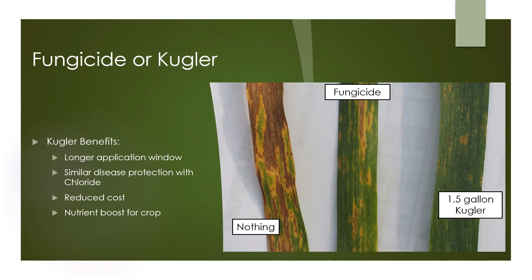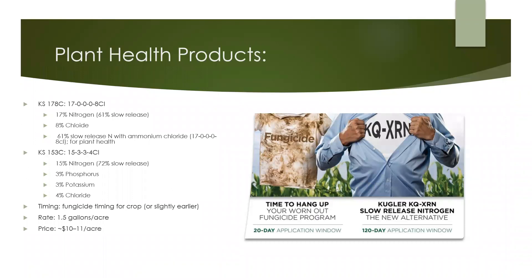It's typically about two-thirds the cost, and you provide your crop with a nutrient boost at the same time. We have two plant health products. First is KS178C — this is 17% nitrogen and 8% chloride, and it works great in most crops including cereals, pulses and canola. The second is KS153, which is 15% nitrogen with 3% phosphorus, 3% potassium, and 4% chloride — this works well in crops taking up phosphorus or potassium late in the season, like canola and pulses. Timing for application is at fungicide timing for the crop, or slightly earlier, as it will stick to the leaves offering extended protection. The common application rate is 1.5 gallons an acre, and the rough cost is $10 to $11 an acre, with 153C being about 40 cents a gallon more than 178C.